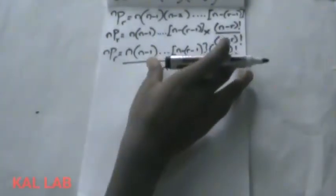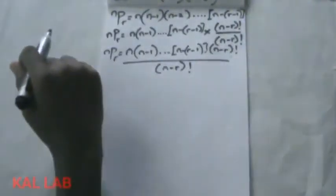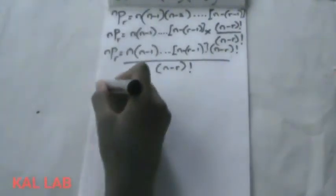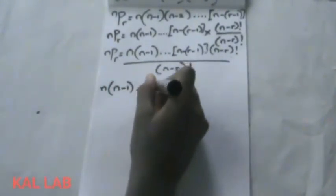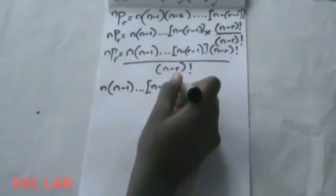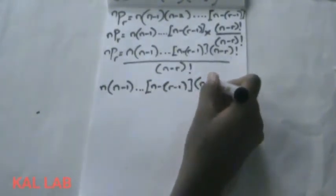But if we observe carefully, we can tell that n, n minus 1, down to n minus r minus 1, times n minus r factorial is actually equal to n factorial. How? I know this is where the main trick is, but we need to observe carefully.